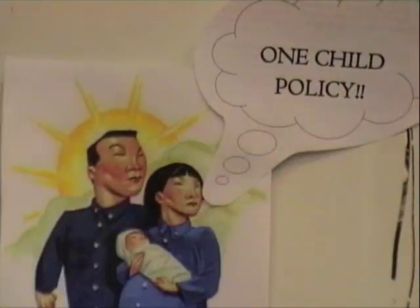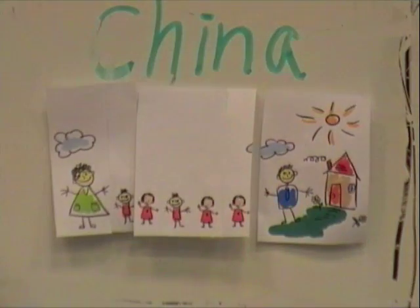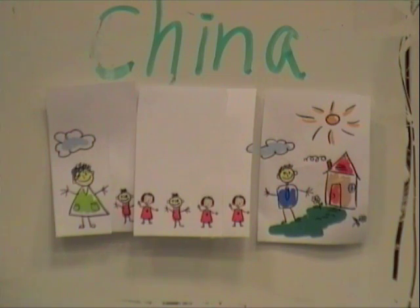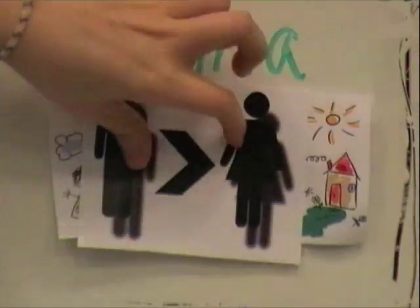For example, programs such as the One-Child Policy in China. Before the policy, the Chinese family used to be larger. But after China imposed a limit of one child per family in 1979, the family changed. In many cases, the only child is a boy, which leads to an imbalance in China's population sex ratio.